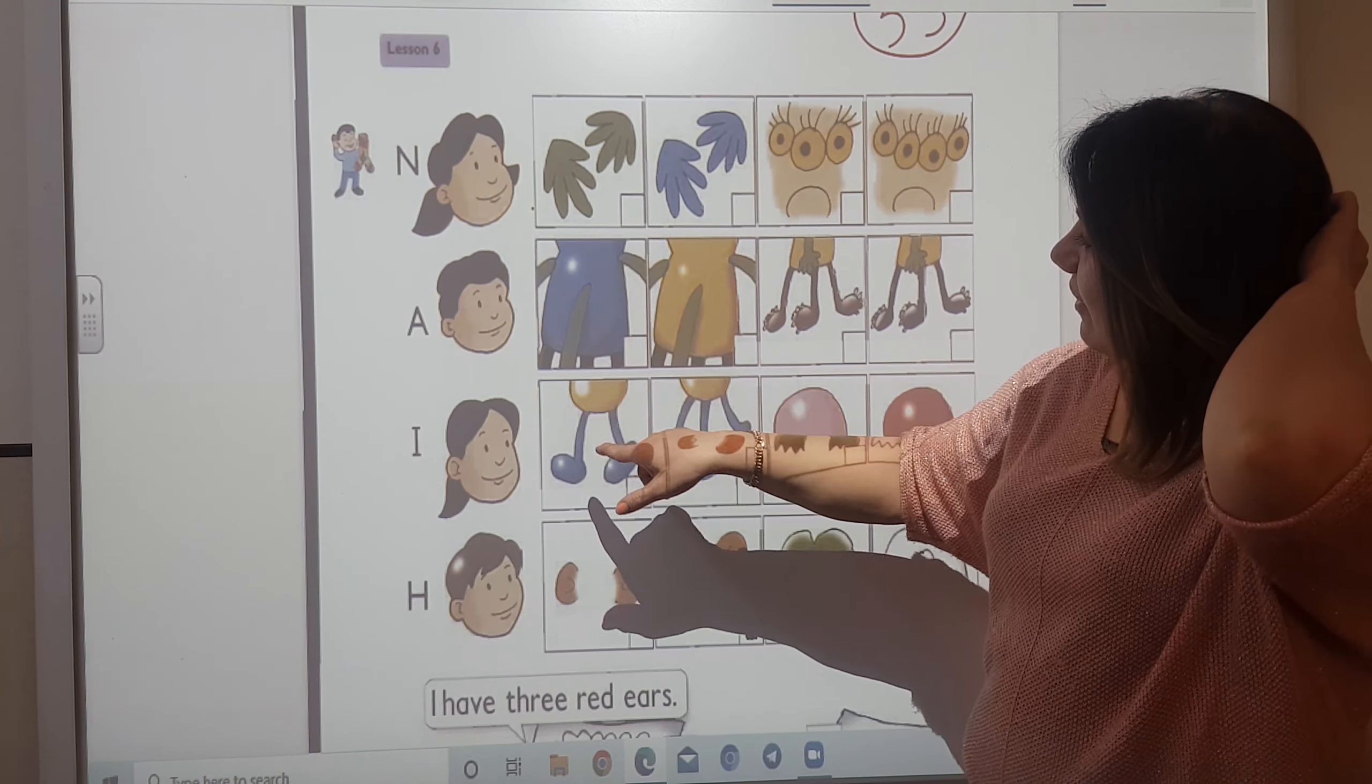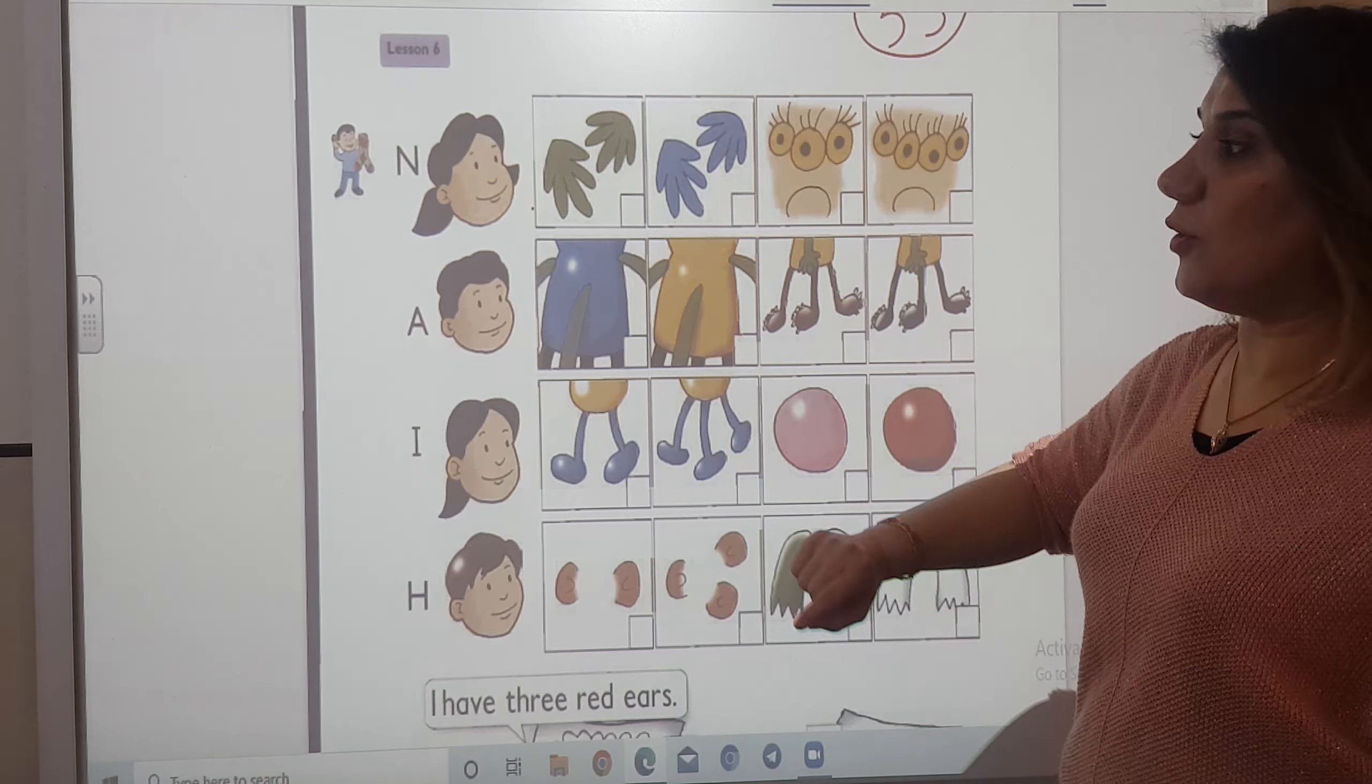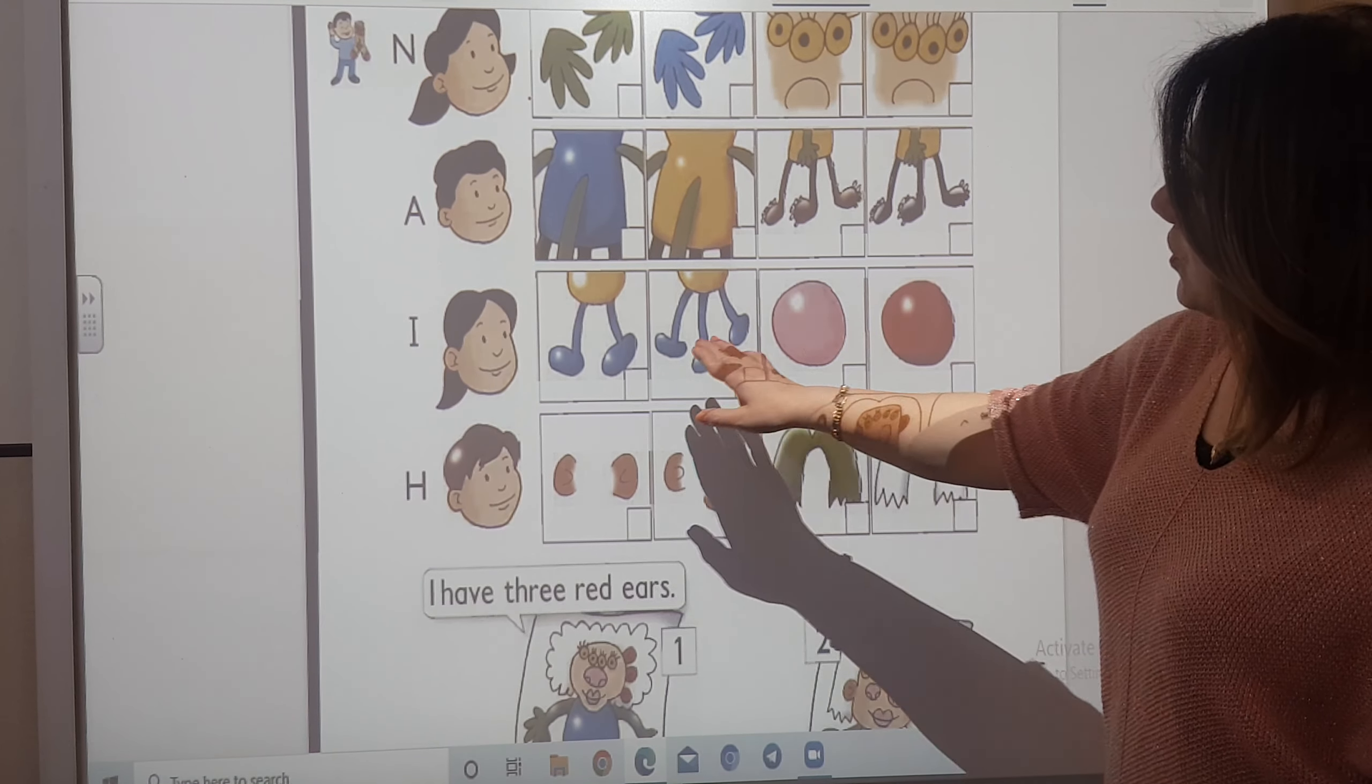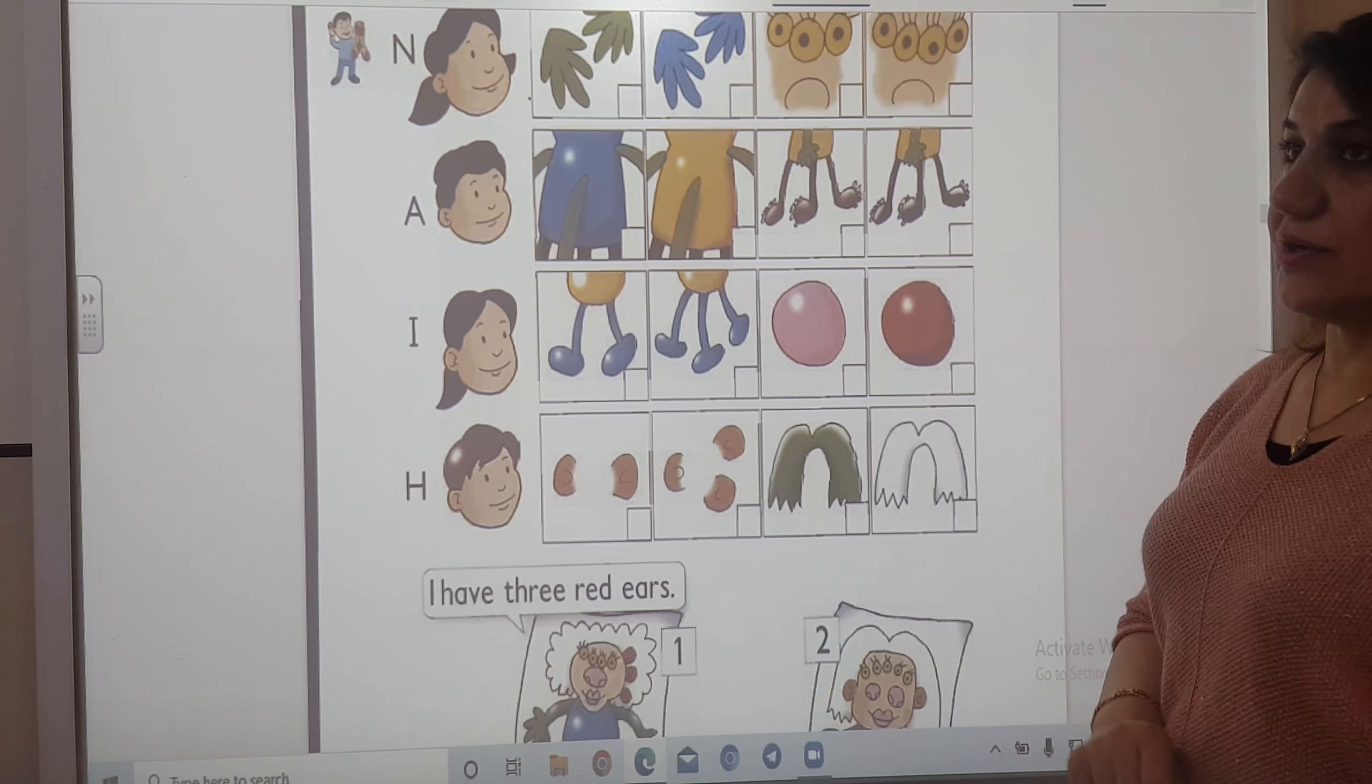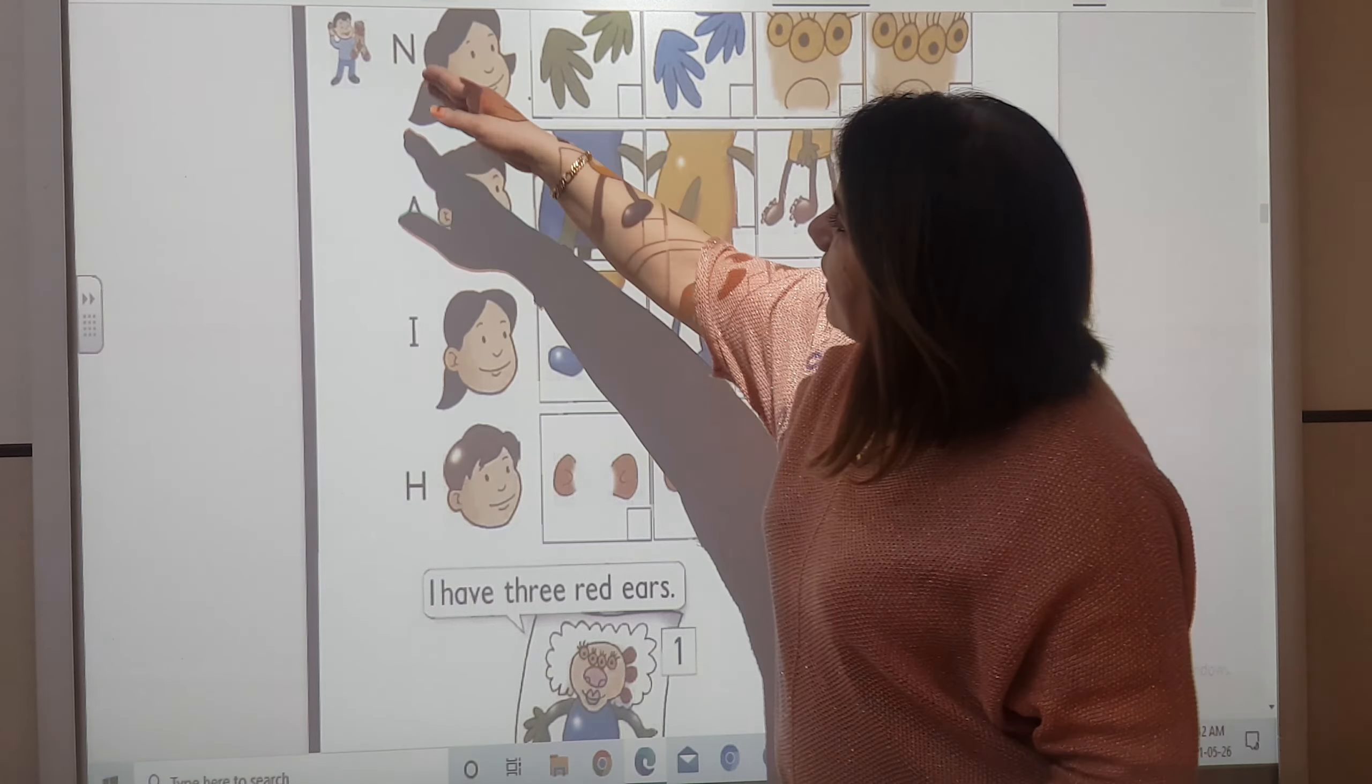And also here we have three green arms and a blue body, three green arms and yellow body, three brown legs, three black legs. Also here we have two blue legs, three blue legs, one pink nose, one red nose, two ears, three ears, one green hair, sorry, and white hair.